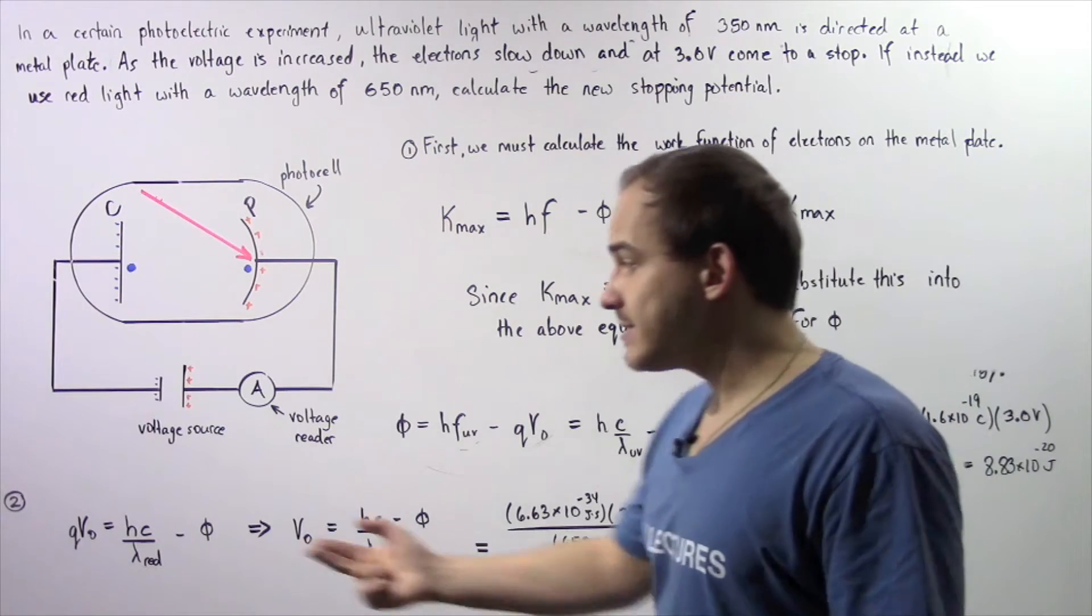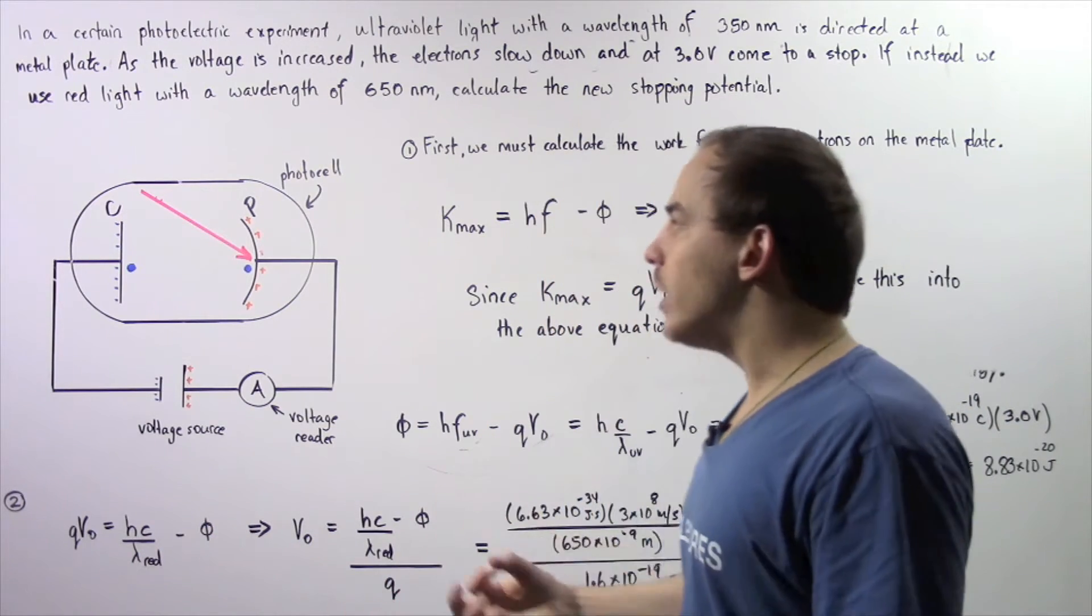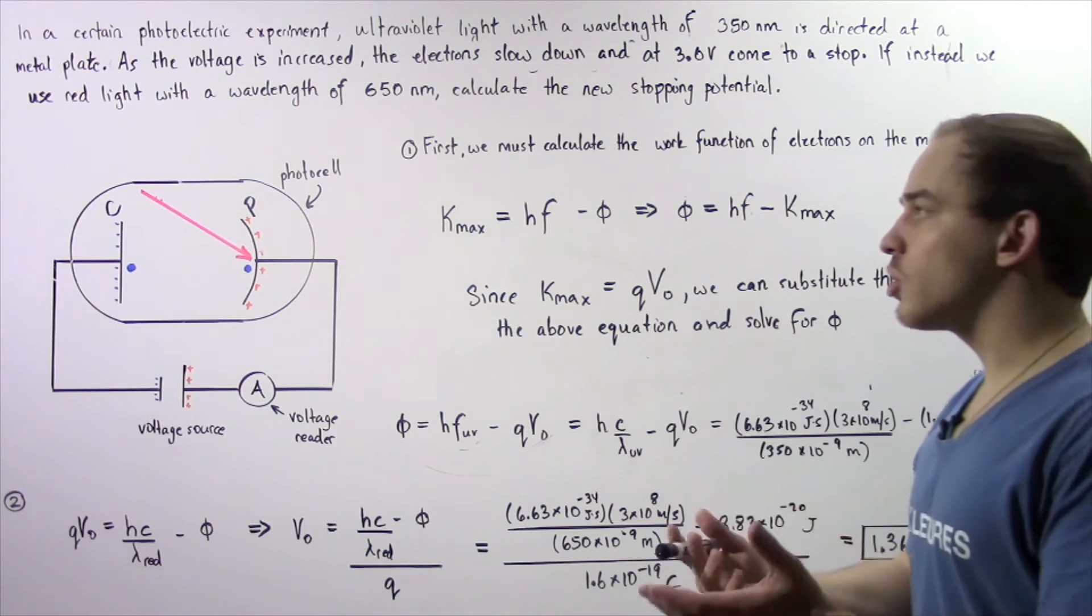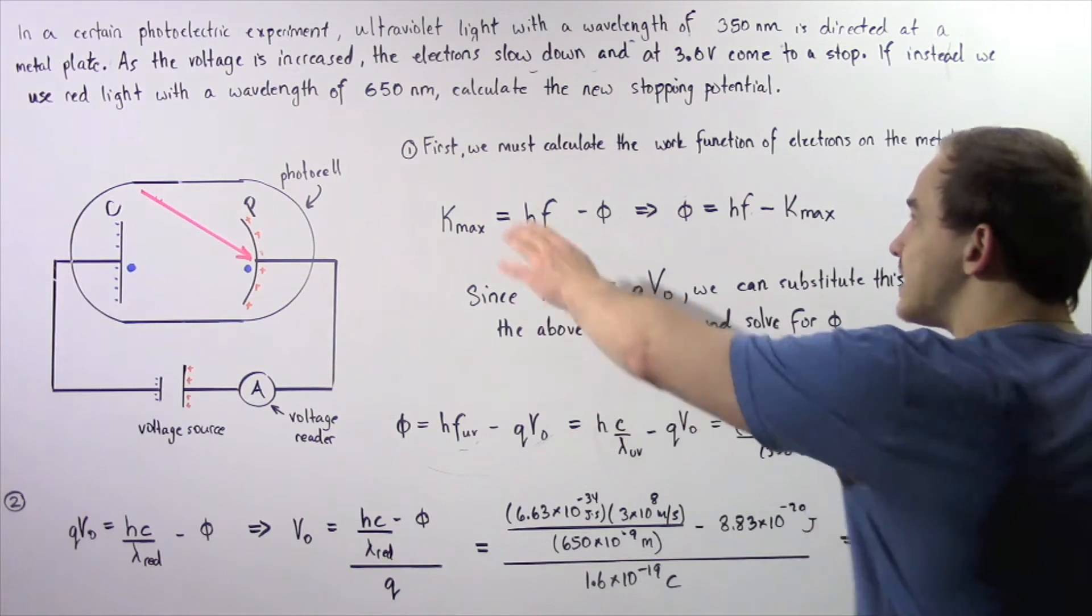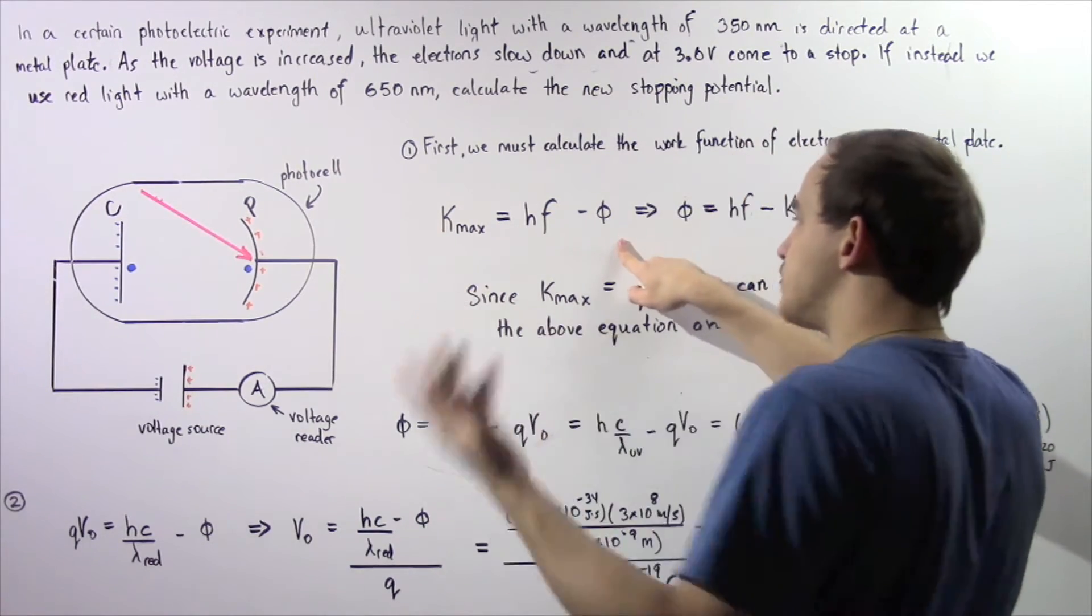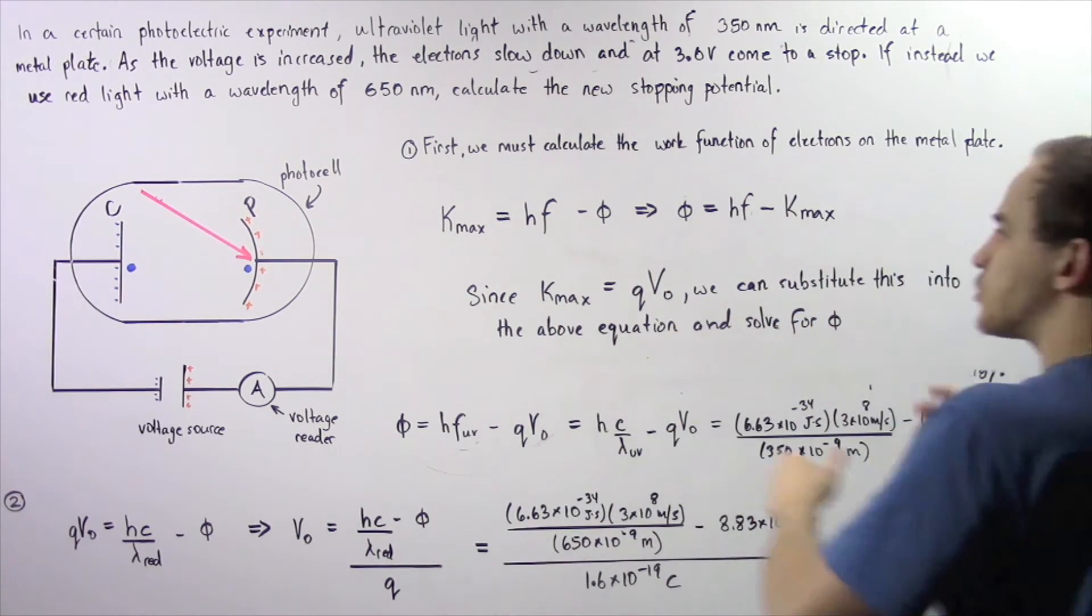So we can use the work function in step 2 to calculate what the new stopping potential is, the stopping voltage for red light. So to calculate what the work function is, we have to use this equation that we spoke about in the previous lecture.